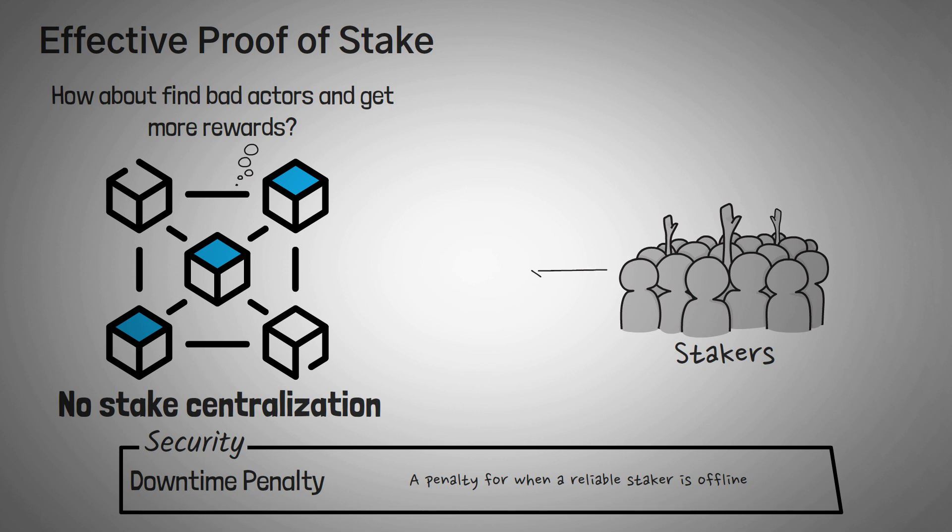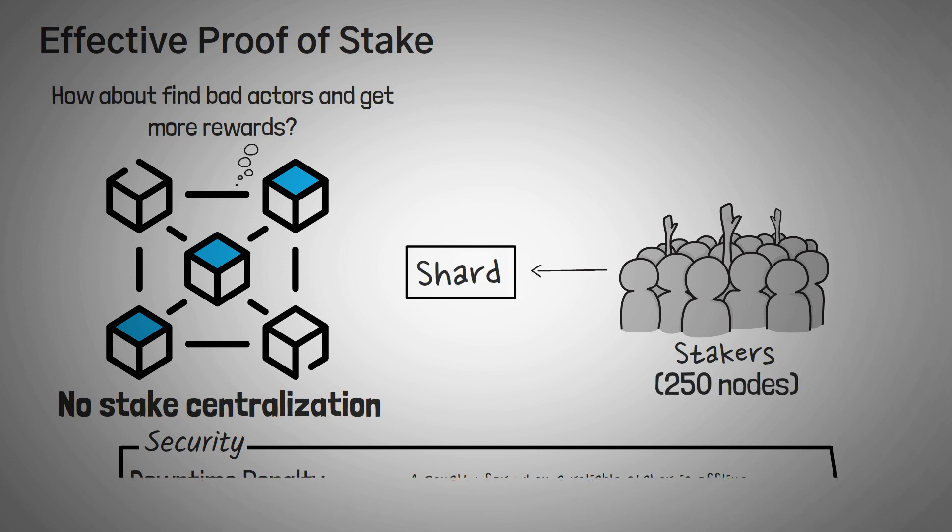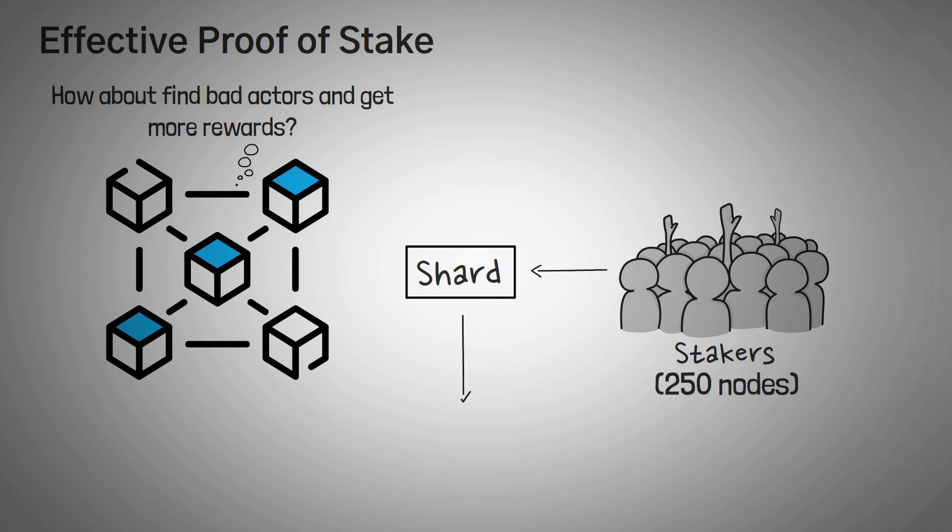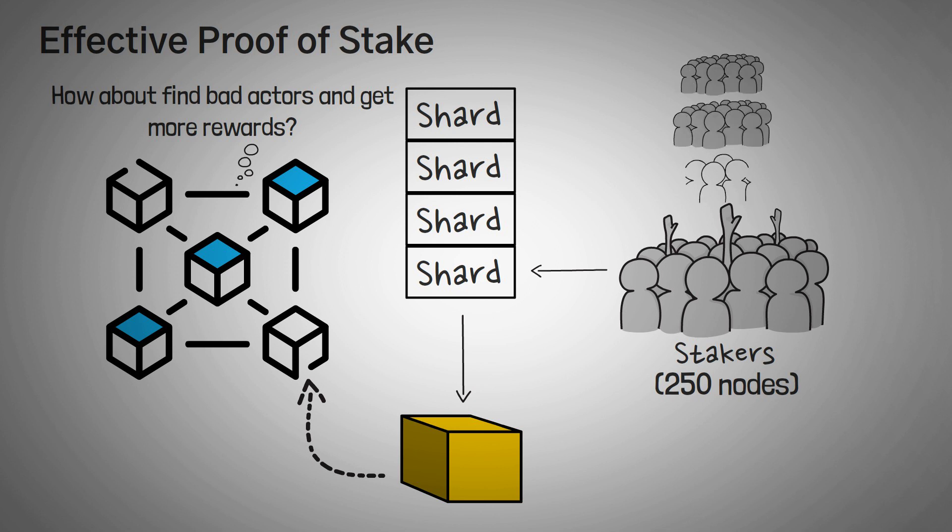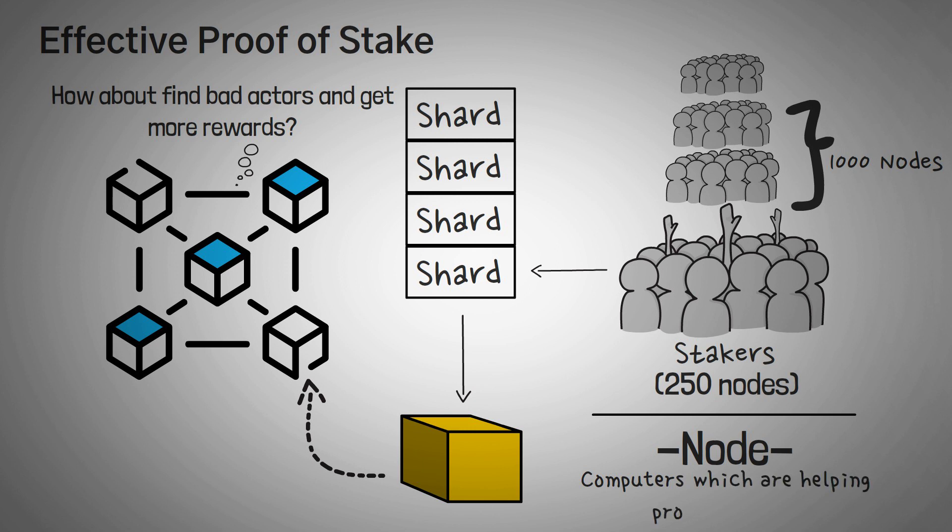So without getting too technical, each shard requires 250 nodes to participate. However, it uses a randomized sequence of all the nodes on the network so that each time a new block is produced, it would be a different set of 250 nodes. For example, let's say there's four shards. This would mean there would be around 1,000 nodes. And by the way, if you don't know what a node is, it's simply a term that means computers, which are helping produce blocks on the network.